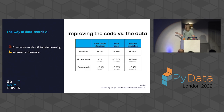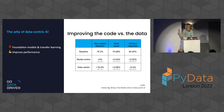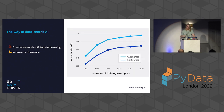Improving the data can be easier and have more impact than improving the model. In these three use cases, tinkering with the model led to almost negligible performance increases, whereas tinkering with the data led to a huge increase in performance. Performance on clean, representative data is simply better than on noisy data — in one case, training on 1,500 noisy data points gives about the same performance as training on 500 clean data points.